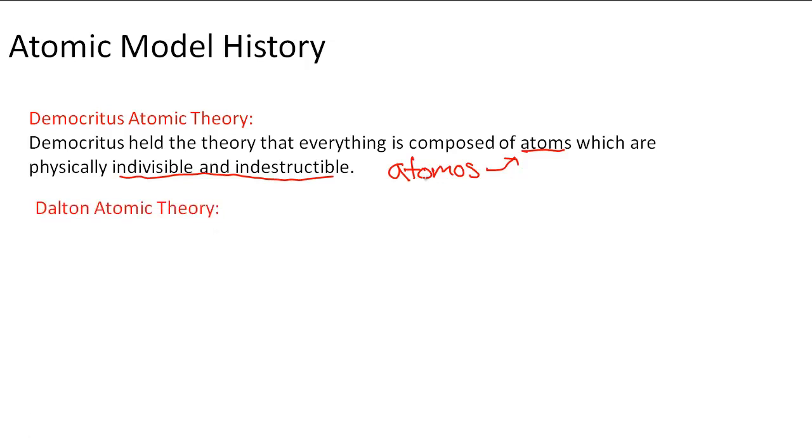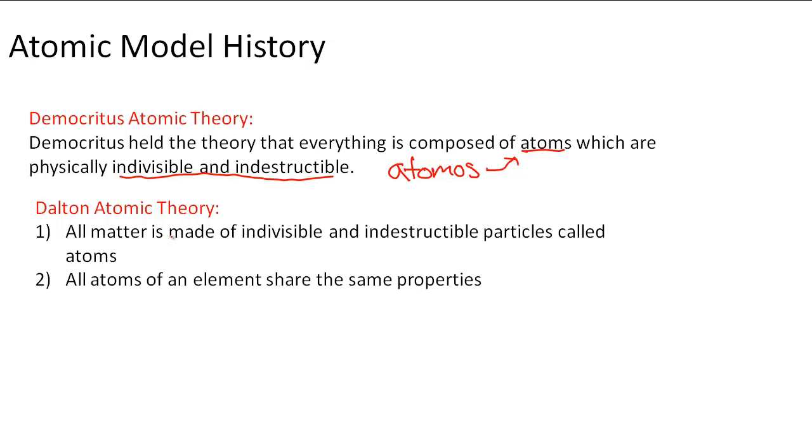But Dalton came along and developed some theory based on experiments that he did. The very first part of his atomic theory is that all matter is made up of indivisible and indestructible particles called atoms which is very similar to what Democritus said. Next part is that all atoms of an element share the same properties.